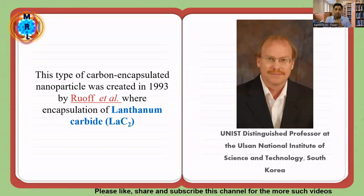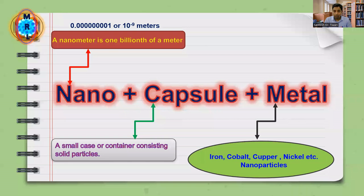This material was first discovered by Rodney Roth and his co-workers, and it was lanthanum carbide. Professor Rodney Roth is very famous and one of the most respected scientists in carbon material research. He is also one of the prominent researchers on graphene and graphene oxide, and he popularized graphene and graphene oxide in different fields of science and engineering. He is an American scientist but presently working in South Korea. The term indicates there are three basic terms in this material: nano, capsule, and metal.